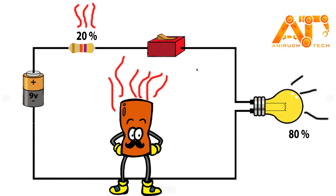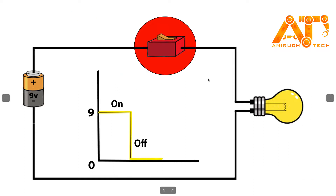The efficient way is to use a switch. If it is on, our bulb receives 9 volts, and if it is off, our bulb receives 0 volts. If you rapidly turn the switch on and off, our average voltage will decrease.